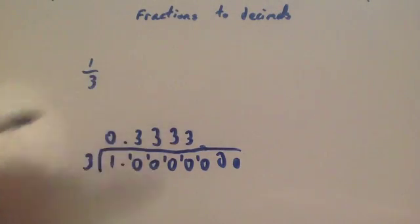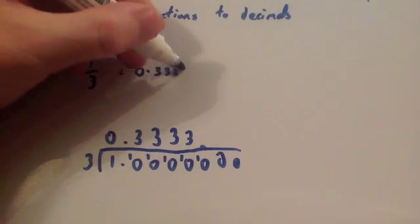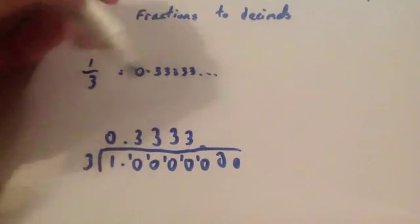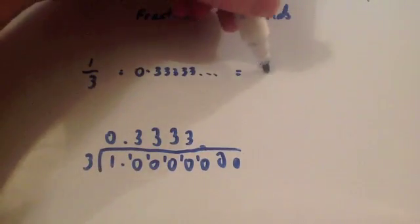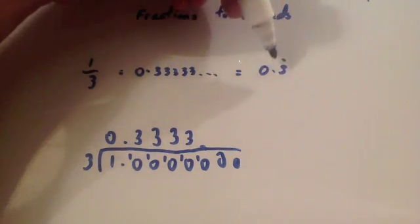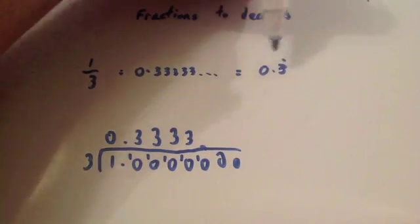Now, this is called a recurring decimal. Because the 3 will just carry on forever. Okay. You could write that as 0.333333. And you carry that on forever. The dots sort of show that that carries on like that. Well, another way to write it is 0.3. And because the 3 carries on forever, you put the 3 and you put a dot above it. And that dot just shows that the 3 will carry on forever.